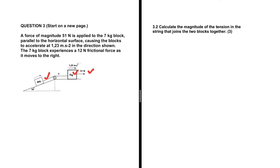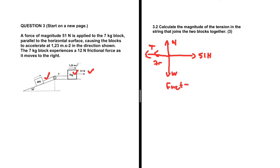For the 7 kg block, first things first we have the weight, the applied force of 51 newtons, the normal force, the tension force, and the frictional force. So we can use F_net equals MA. We have the mass, the acceleration, and the forces acting on the object. So: force applied minus all forces opposing the motion — that is the frictional force and the tension force — equals MA.